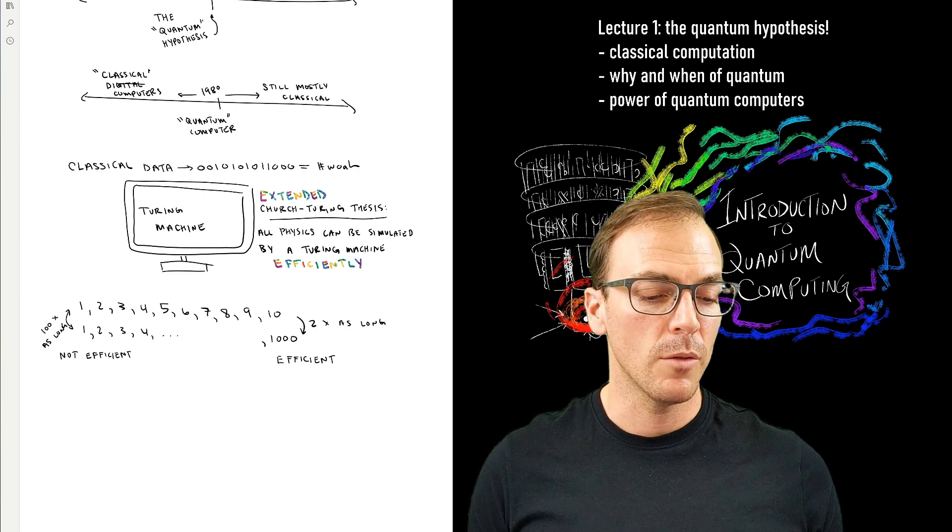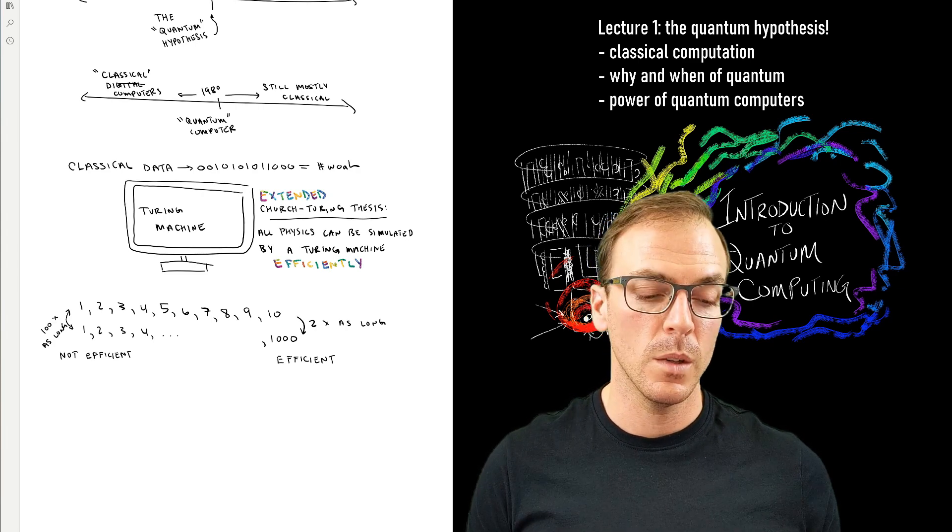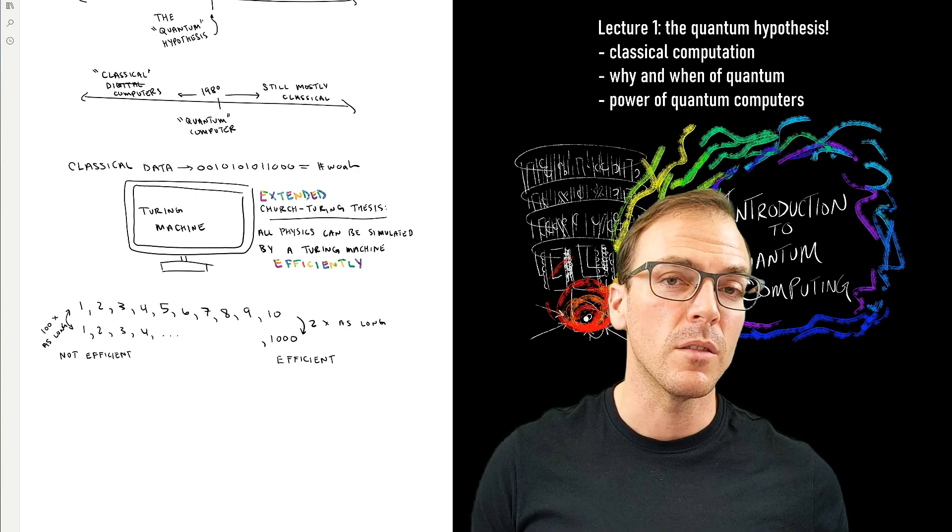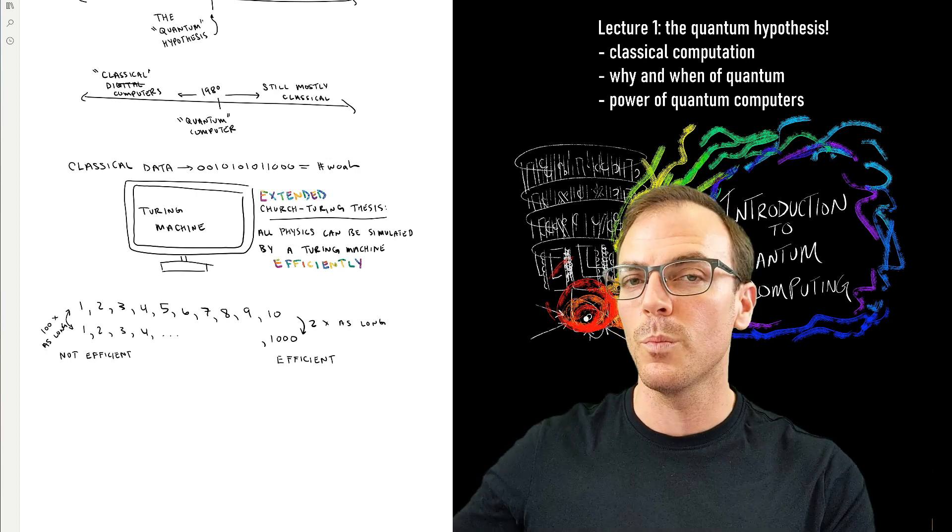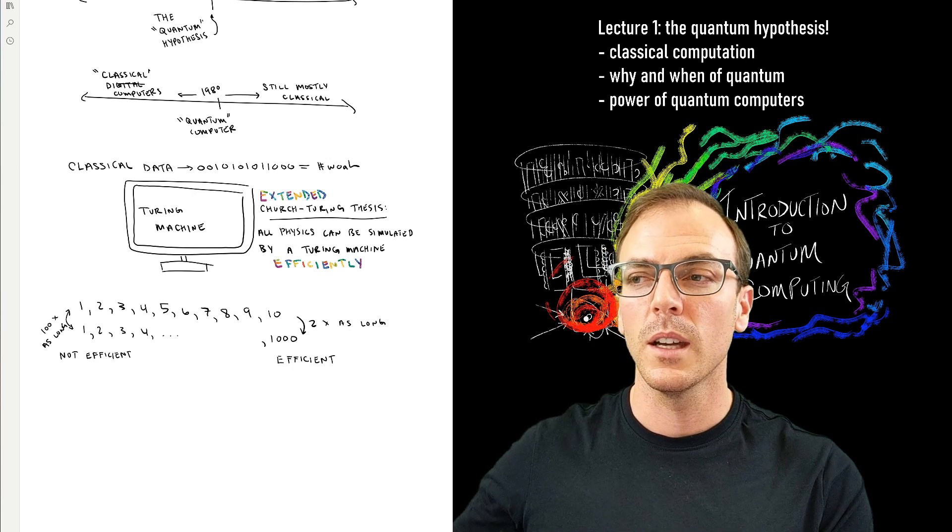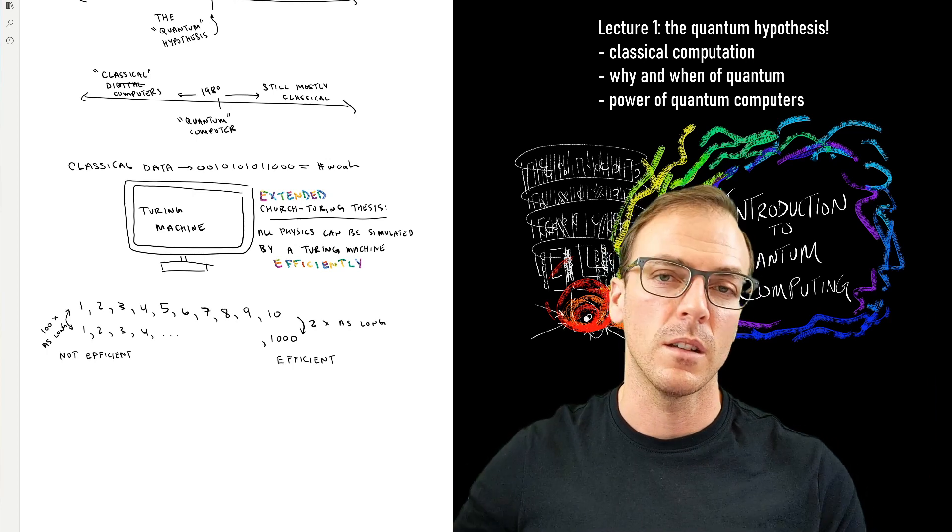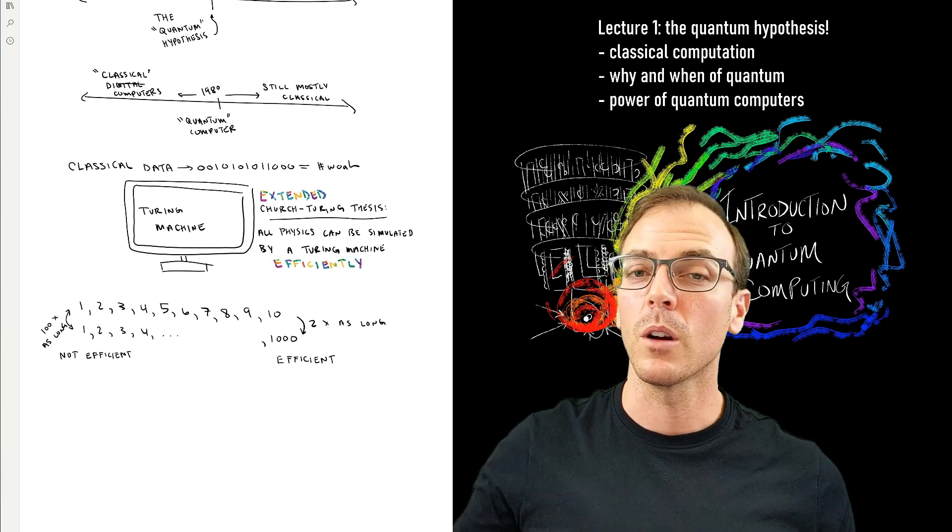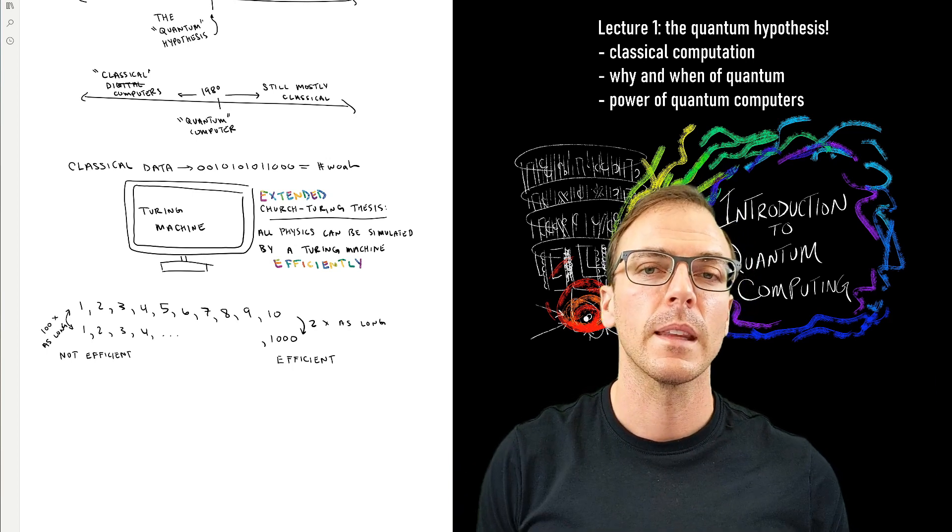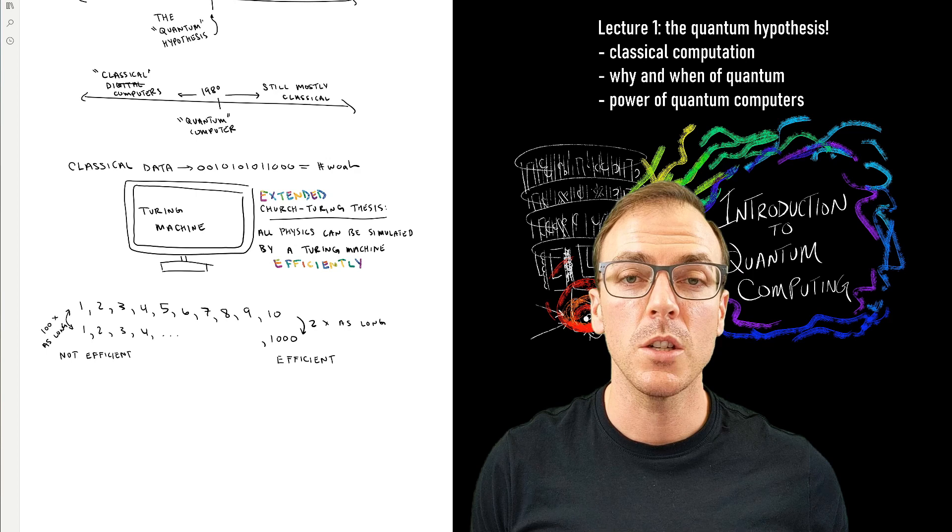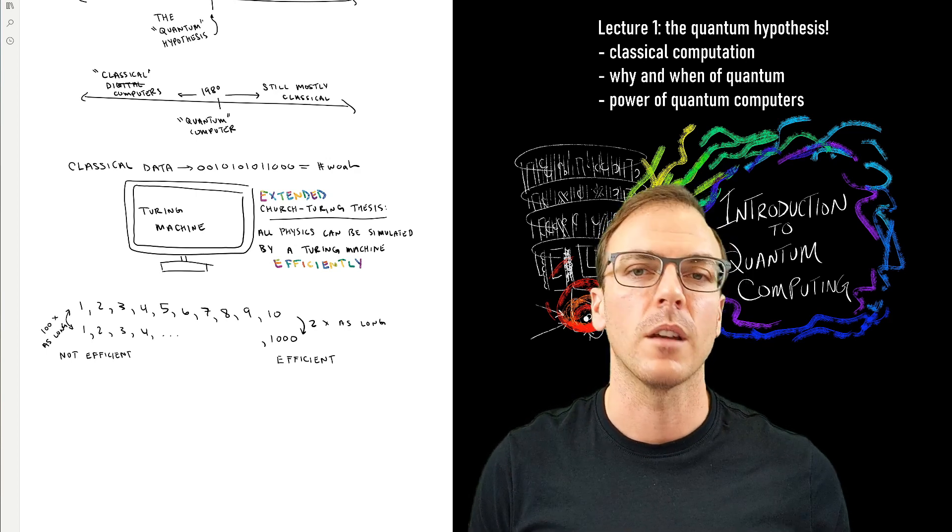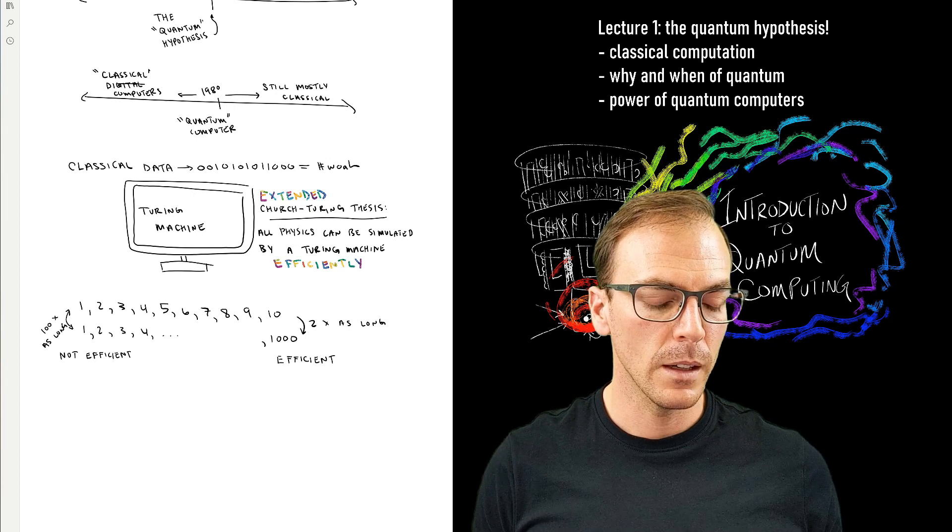Well, if all physics can be simulated with one of these devices, then, of course, I could use that device to simulate what this new potential computer is going to do. And if it could solve it efficiently, then the original device could simulate the computer solving it efficiently. So it would also solve the problem efficiently. So there's no point in building a new machine if you've proven that the problem cannot be done efficiently.